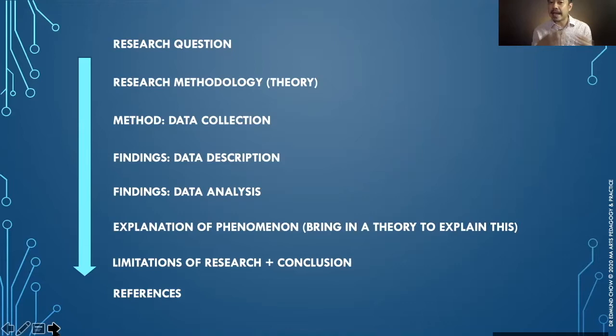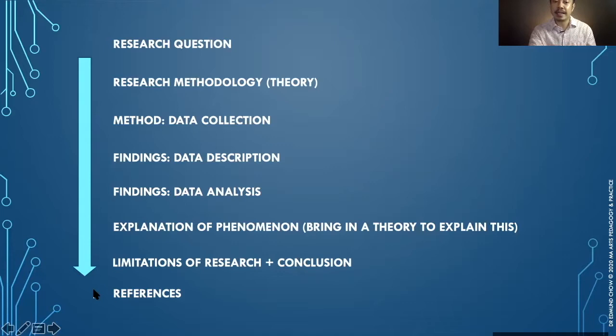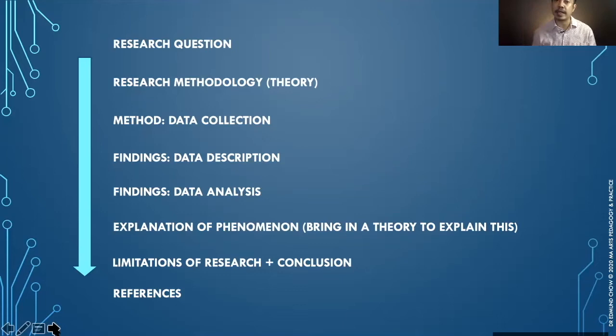Following that, you go into your data analysis of those findings or descriptions, and then you explain a specific phenomenon using a theory to explain what is happening. Then you end with limitations of the research, future research implications, and a conclusion leading up to your references. That's the flow you should be able to see at a glance, because this is a standard flow for all academic research writing.